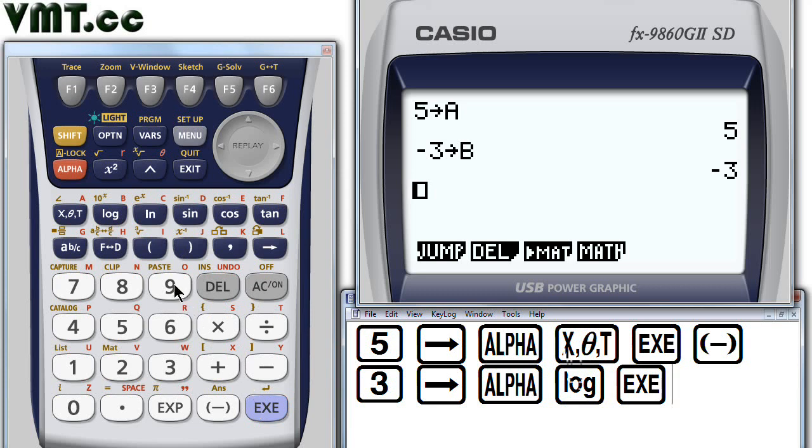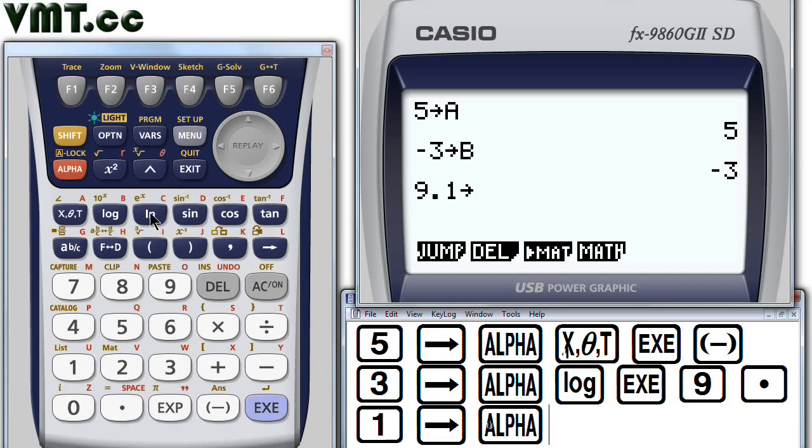Next, 9.1, store, alpha, and then the natural log key for the variable c. Execute.